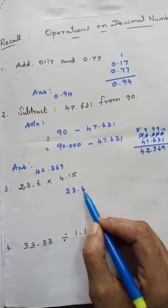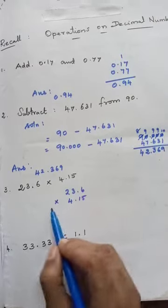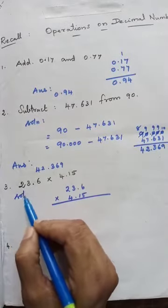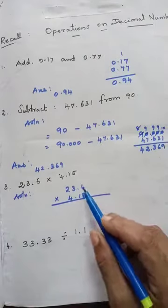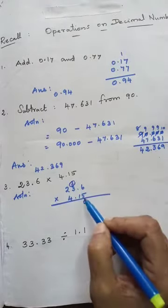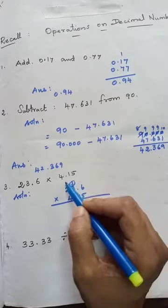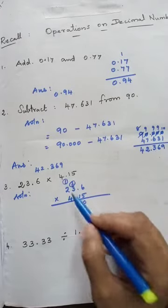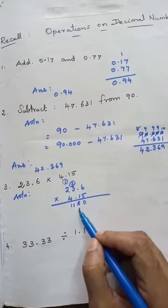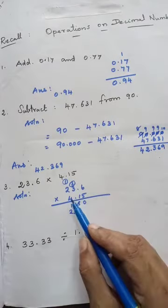Third problem is multiplication: multiply 23.6 into 4.15. First you multiply by 5: 6 fives are 30, remainder 3. 3 fives are 15 plus 3 is 18, remainder 1. 5 fives are 25 plus 1 is 26 — wait, 5 twos are 10 plus 1 is 11. Then multiply by 1: 6 ones are 6, 3 ones are 3, 2 ones are 2.